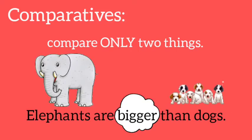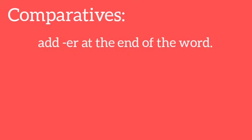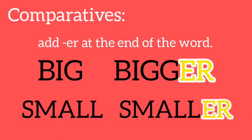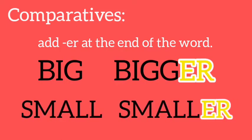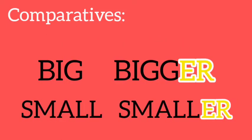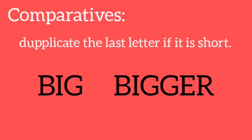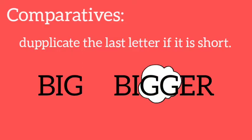Comparative adjectives add a suffix at the end of the word. For example: big → bigger; small → smaller. And if the adjective is too short, they duplicate the last letter. For example: big → bigger.